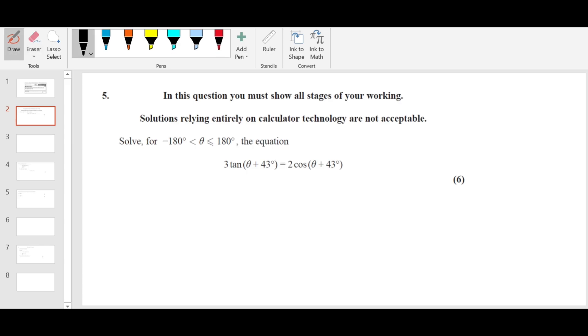Solving trigonometric equation. The first step in solving trigonometric equation is converting the whole equation into an equation of a single trigonometric function. So I can write this as 3 sine over cos, since tan is sine over cos. This equals 2 cos. Bring it here. It becomes 3 sine theta plus 43 degrees equals 2 cos times cos, which is cos squared. Do not skip any step.